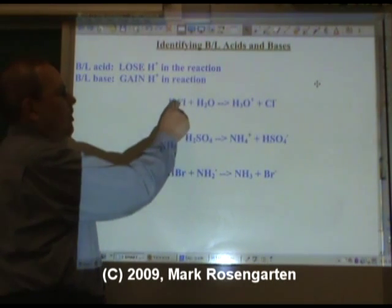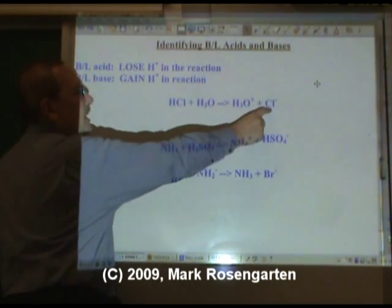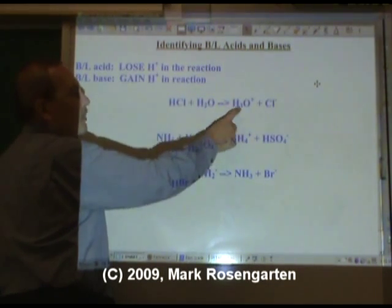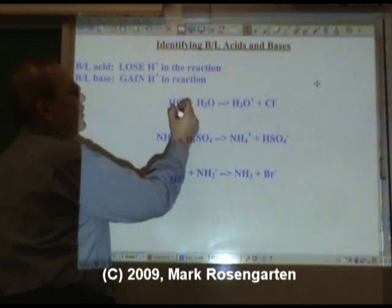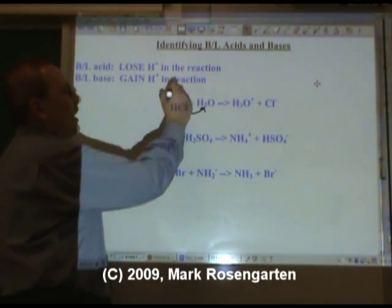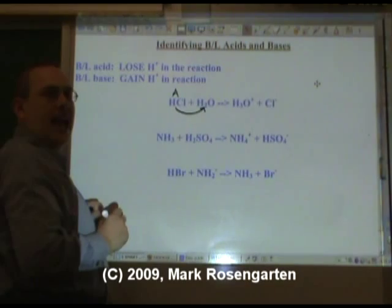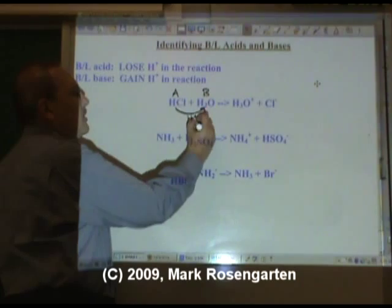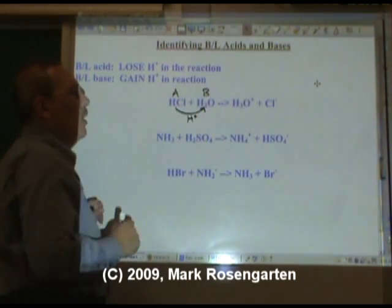In this reaction right here, the HCl turns into Cl-, and the H2O turns into H3O+. That means that the HCl gave up its hydrogen to the water. HCl acted as the Brønsted-Lowry acid, and the water acted as the Brønsted-Lowry base, as the hydrogen was given from HCl to H2O.